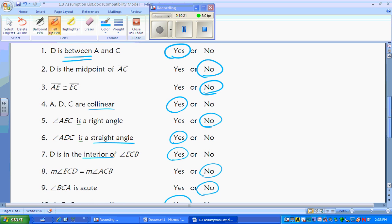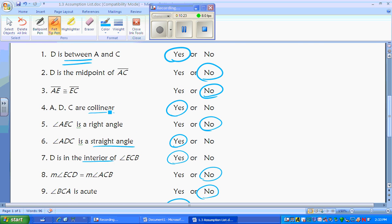So to recap, the things that you can assume are betweenness, if something is collinear, if something makes a straight angle, and if something's interior. Do not assume anything else.